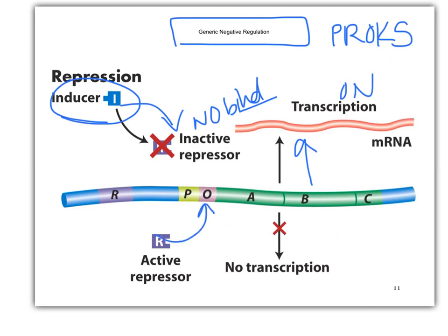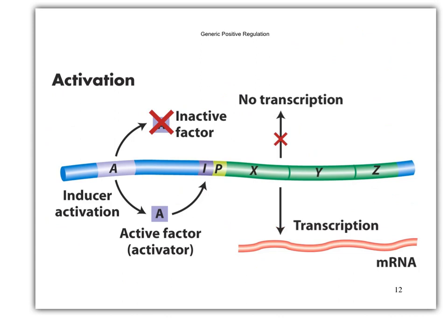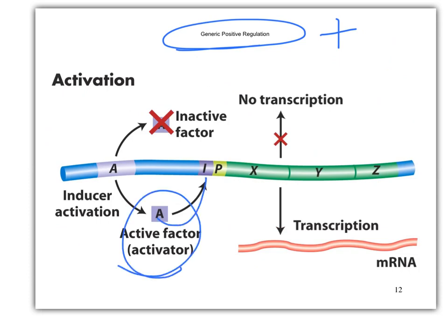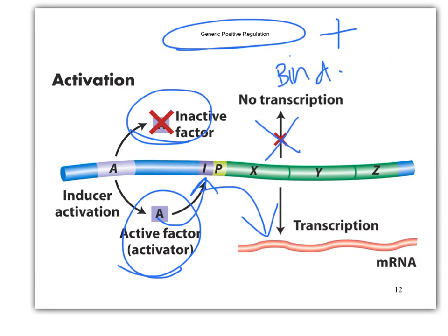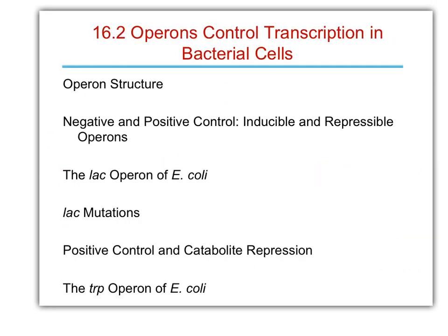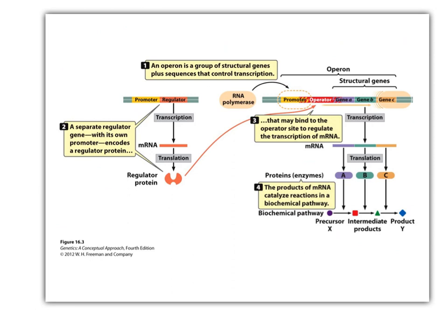If we have an active repressor and it can bind to the operator — if the inducer activates it — then we get no transcription. For generic positive regulation: if we have an inducer activating an active factor and it binds, we get transcription. If the factor is not active and cannot bind, no transcription. Binding equals on — that's positive regulation.